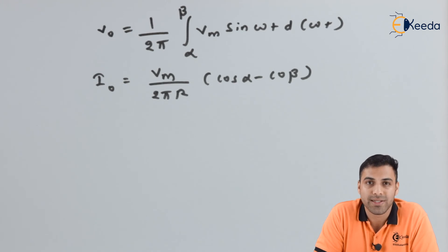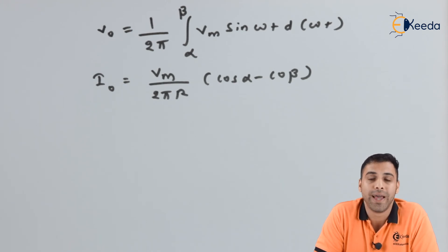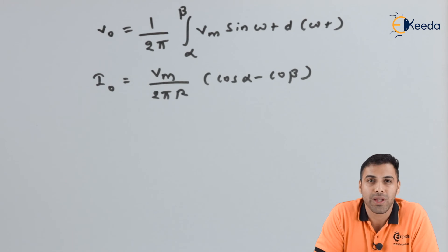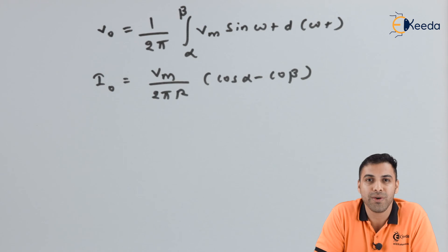To summarize: using a thyristor, we can rectify a sinusoidal AC voltage. However, we will not get the negative half cycle across the output load. Using an RL load, we can use a thyristor to control the conduction angles and hence control the output voltage. Thank you so much for watching this video. Please subscribe to Ikeda and stay tuned. Thank you.